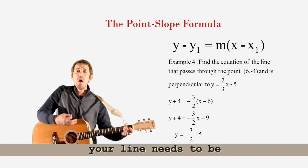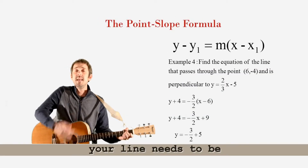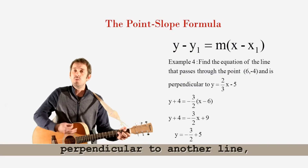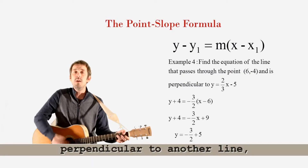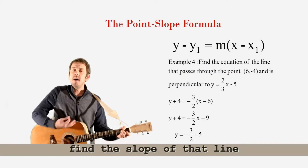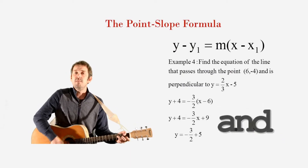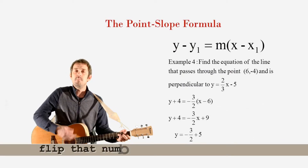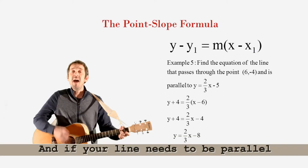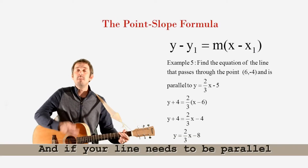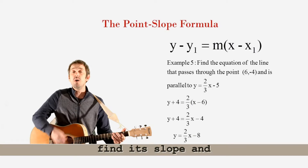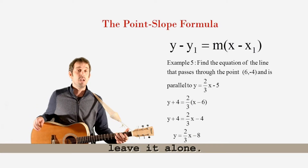And if your line needs to be perpendicular to another line, find the slope of that line and flip that number and change its sign. And if your line needs to be parallel to another line, find its slope and leave it alone.